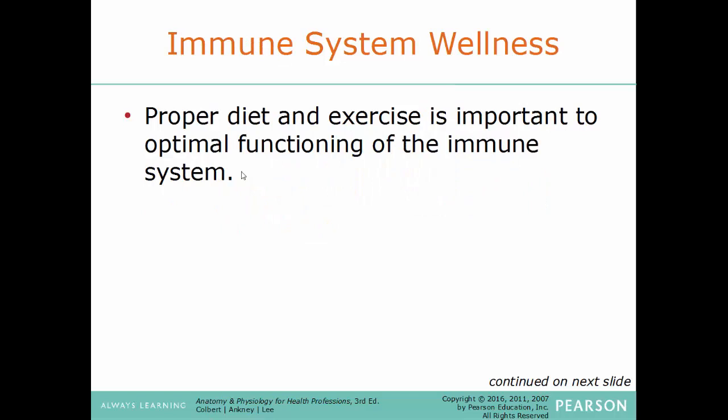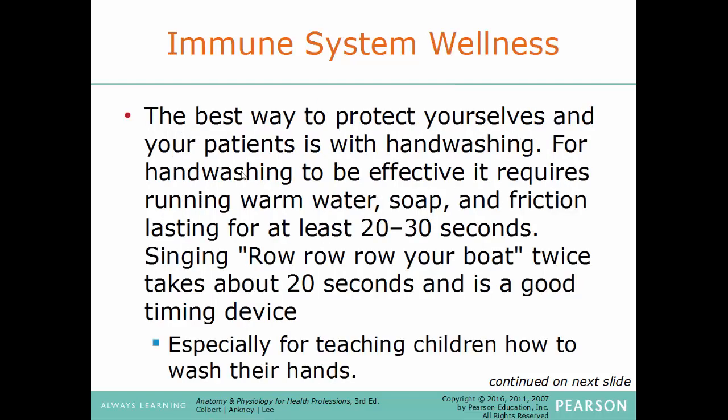Immune system wellness: again, proper diet and exercise are important for optimal functioning. The best way to protect yourself is proper handwashing — running warm (not hot) water, soap, and friction lasting at least 20 to 30 seconds. A common way to remember this: sing 'Row, Row, Row Your Boat' twice, which takes about 20 seconds. This is especially helpful for teaching children how to wash their hands correctly. You should wash your hands both before and after lunch, going to the bathroom, entering or leaving a patient's room, and any time your hands may become soiled.